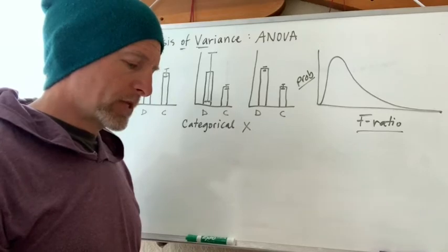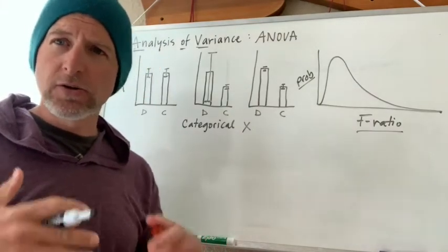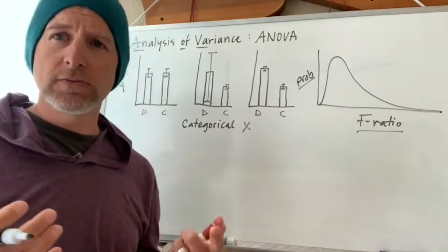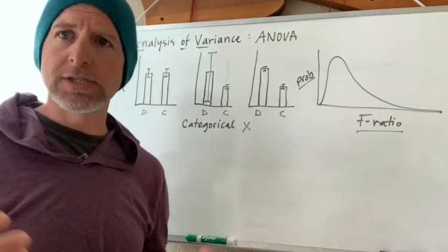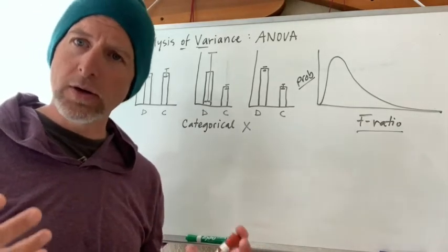But you might be getting tired or confused hearing all these different scores. There's the chi-square score, there's the t-score, there's a z-score, there's an f-score. What are these scores?